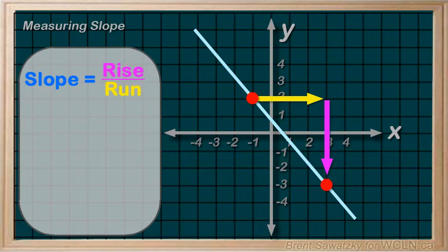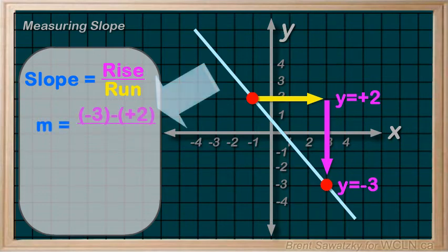We look at our y values. It rises from plus 2 to negative 3. Which is really a drop. We could count the blocks. Negative 2 to get us through the x-axis and another 3 to our point. Or just subtract the y values. So, negative 3 minus plus 2.